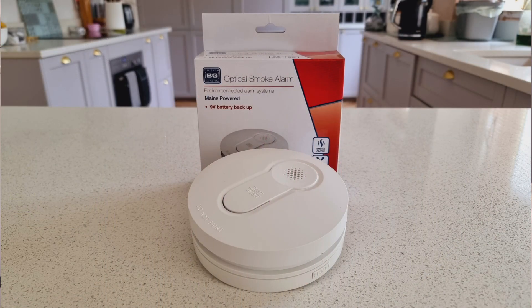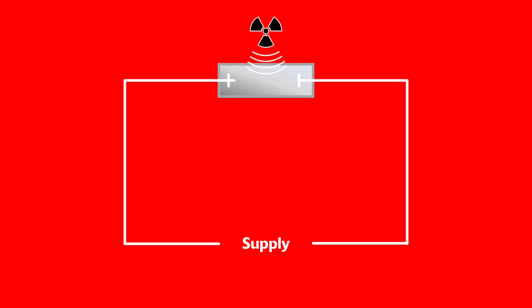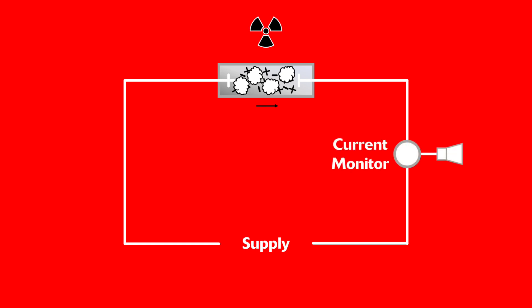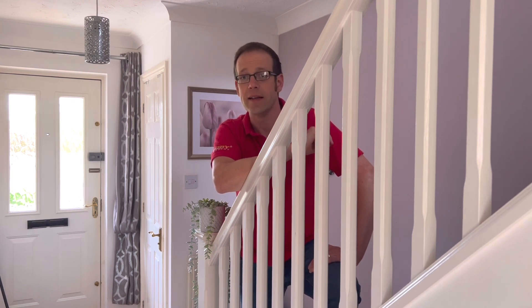Smoke detectors break down into two subcategories: ionisation and optical. An ionisation smoke has a small chamber with a circuit and an electrode at either end. Normally no current would flow, but the chamber is filled with radiation from a small amount of radioactive material, usually americium-241. This ionises the air in the chamber, allowing current to flow. If smoke enters, the ionisation is reduced, the current finds it harder to flow, and the alarm is triggered. This detector is more responsive to the small particles produced by a flaming fire, but less responsive to the larger particles from a low smouldering fire.